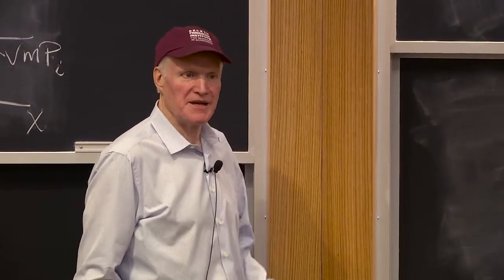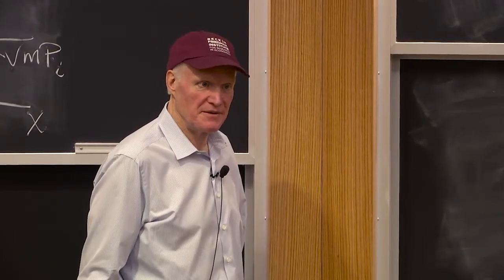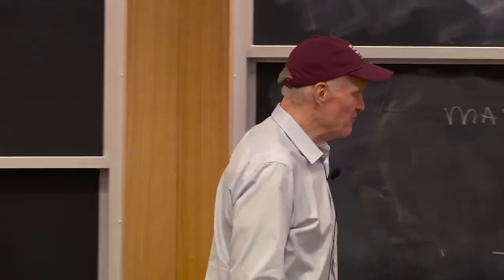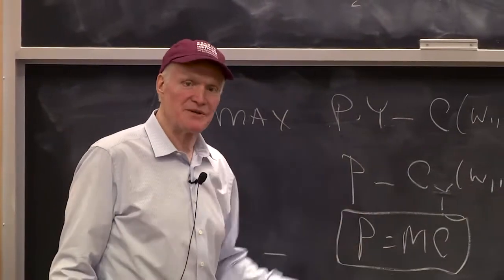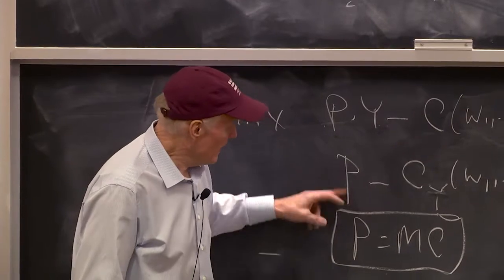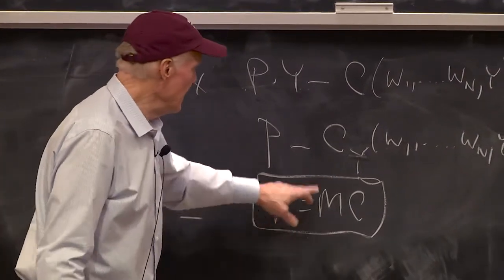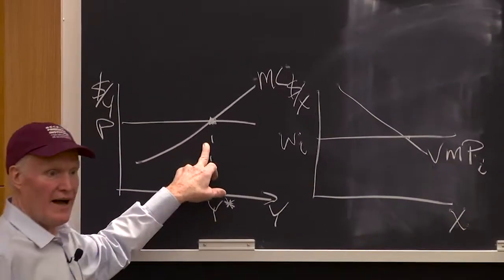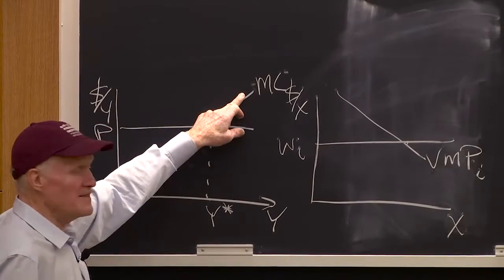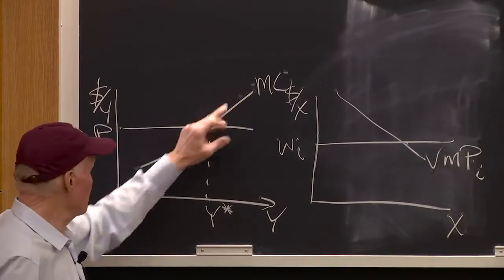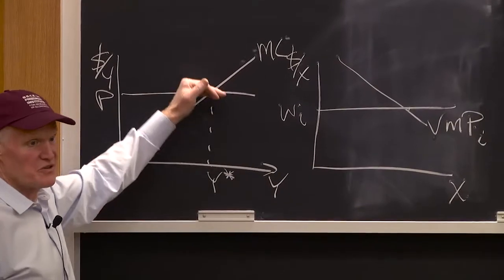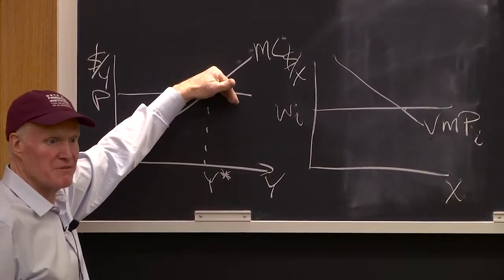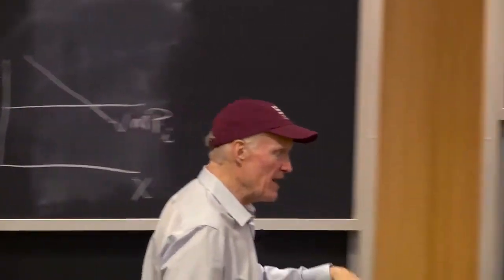What will we do when that's constant returns to scale? As economists, why not constant returns to scale? Because in order for this to have a meaningful solution, when I go to the second stage, I get a picture that looks like this — I get rising marginal costs. If I had flat marginal costs, it's not going to cross. If I had declining marginal costs, it's going to be a minimum, not a maximum. So I need some kind of rising costs.